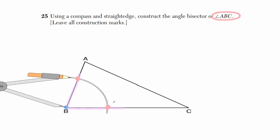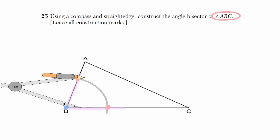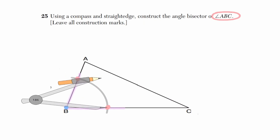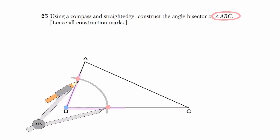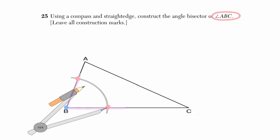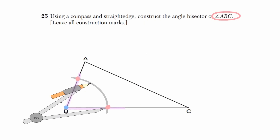Now that we have those two intersections, let's place the metal tip at the bottom of those intersections. Let me rotate my compass — this is the full distance of those two intersections. Let me close it a little bit. As long as I'm more than half of that distance, which is okay, this is more than half.